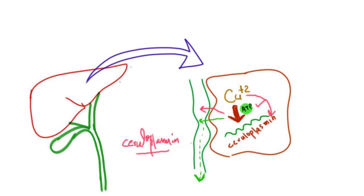In Wilson's disease, there is a genetic defect as a result of which the protein which was normally incorporating copper into ceruloplasmin is not functioning. So copper cannot be incorporated into ceruloplasmin, and therefore the copper-ceruloplasmin complex cannot be thrown out of the hepatocytes into the bile. As a result, copper cannot be excreted and starts to build up within the hepatocytes.